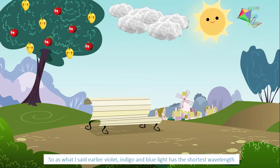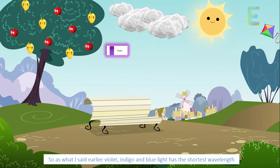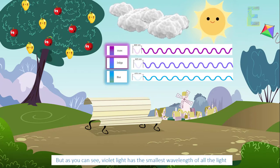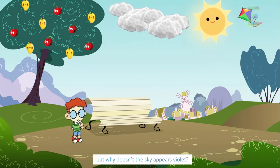So as I said earlier, violet, indigo, and blue light have the shortest wavelength among others. So violet, indigo, and blue light will be scattered most. But as you can see, violet light has the smallest wavelength of all light. But why doesn't the sky appear violet?